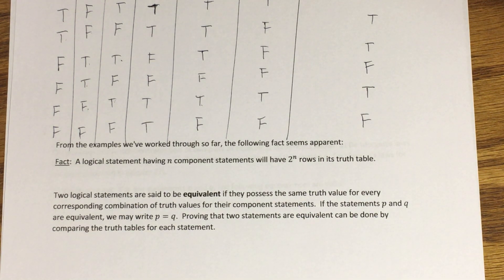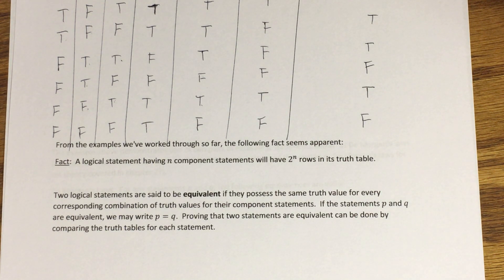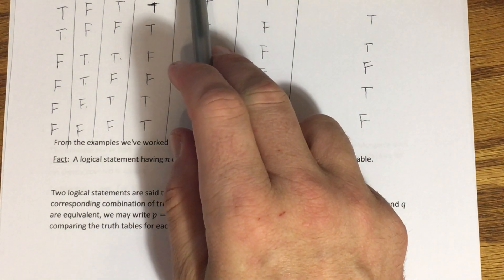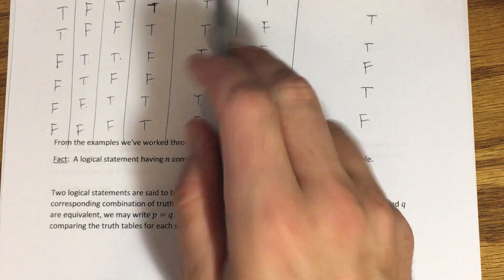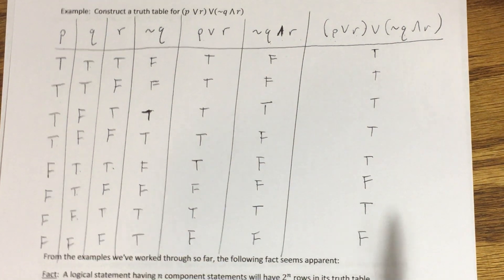This grows exponentially with more component statements. A compound statement with 10 component statements would require 2^10 rows — that's a lot. So we won't look at anything more than three component statements, because even that is complicated enough.